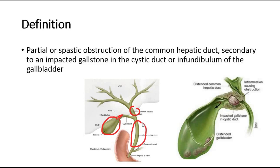In Mirizzi's syndrome, there is obstruction of the common hepatic duct, which is this duct over here, secondary to an impacted gallstone in the cystic duct or in the infundibulum, which is near the neck of the gallbladder. The stone is impacted over here, and then further inflammation or infection of the stone will cause compression on the common hepatic duct as well. This is what we call Mirizzi's syndrome.